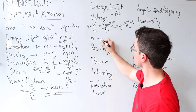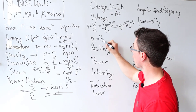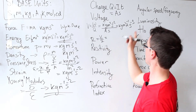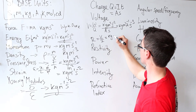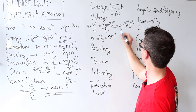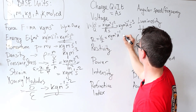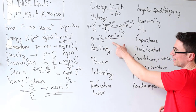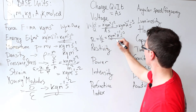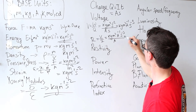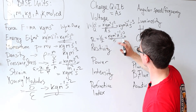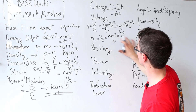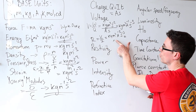Resistance — because resistance is V over I, where V is the voltage and I is the current. This will have the base units of voltage, which is kg m² A⁻¹ s⁻³, divided by the units for current which is just amps. So the whole thing gives A to the power of minus two for resistance.